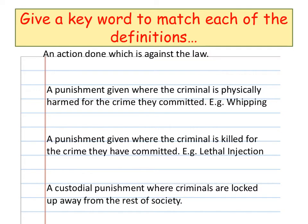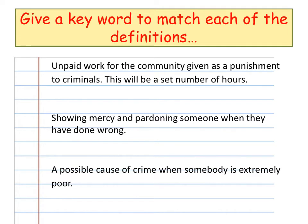Number three: a punishment given where the criminal is killed for the crime they have committed, for example a lethal injection. Number four: a custodial punishment where criminals are locked up away from the rest of society. Number five: unpaid work for the community given as a punishment to criminals. This will be a set number of hours.